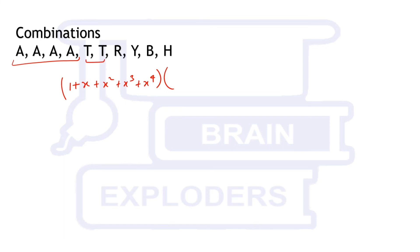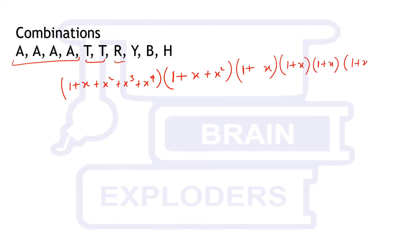For the A's part: (1 + x + x² + x³ + x⁴). For T's: (1 + x + x²). For R, Y, B, H each: (1 + x). If we find the coefficient of x^4 in this entire product, it will tell us the number of ways to select four letters from RAABHTT. You can verify this yourself — you will get 42.